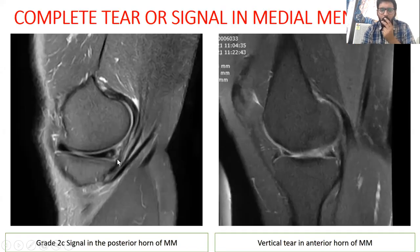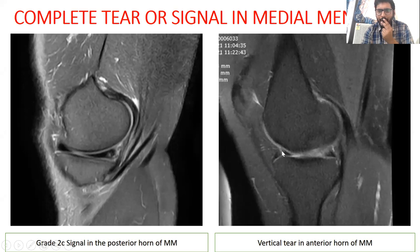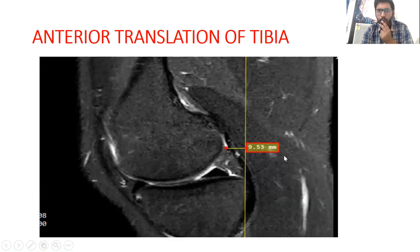A complete tear of the medial meniscus is when the signal intensity reaches one of its articular surfaces. This is a grade 2C signal in the posterior horn of the medial meniscus, and this is a vertical tear in the anterior horn of the medial meniscus.